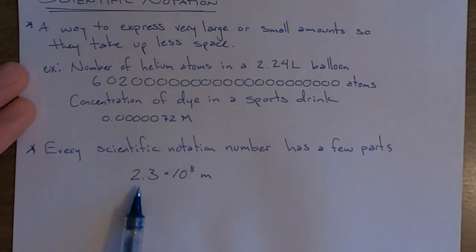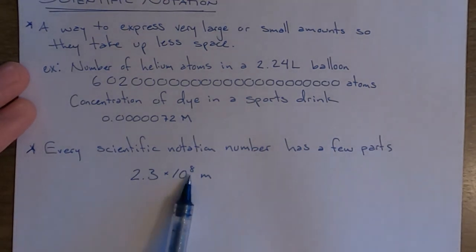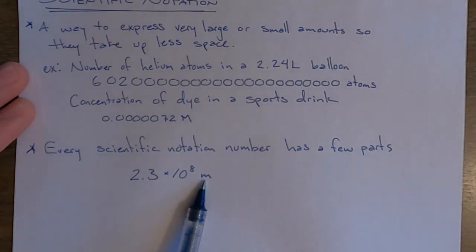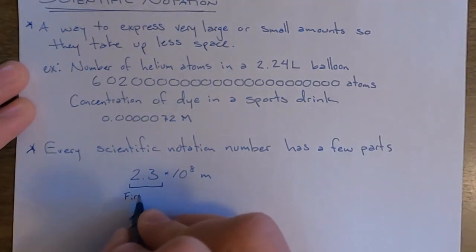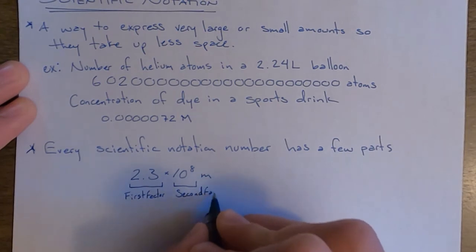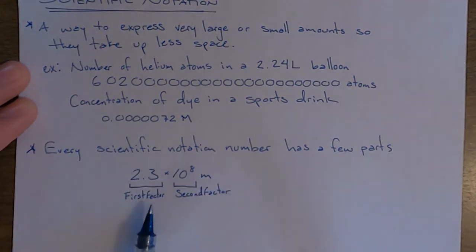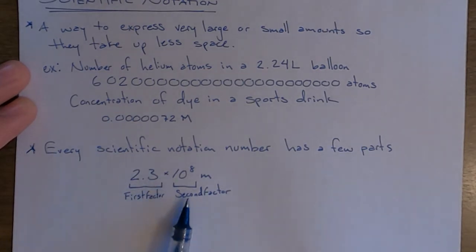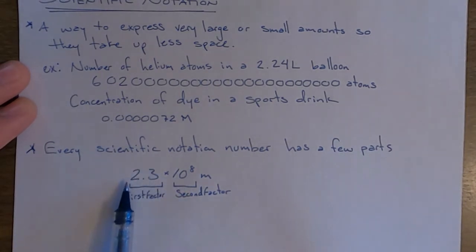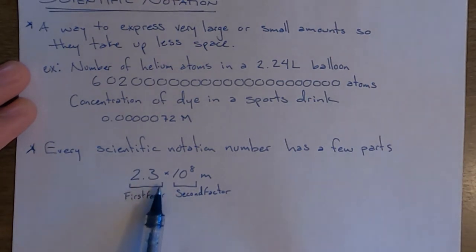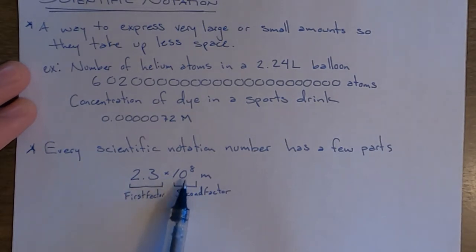So this is a number in scientific notation — it's 2.3 times 10 to the 8th power, and then the units, meters. There are a few parts to this. We can divide it into the first factor, which is what comes before the times sign, and the second factor, which is what comes afterward. The first factor always is a number that has one significant digit, then a decimal point, and then possibly more digits depending on the precision of the measurement. The second factor is always 10 raised to some power.